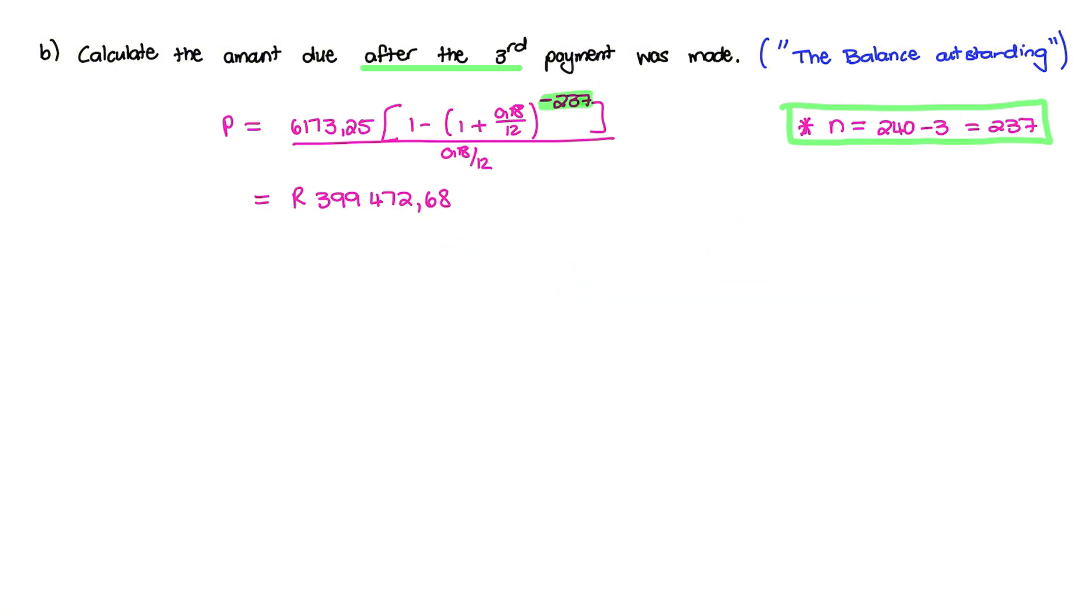So when we move money backwards, we are missing three payments. And in the previous question, we had 240 payments. But after three payments, we have 237 payments left. And we use the X value that we have found in our previous question. So I simply plug it into this present value annuity. And I have the balance outstanding as 399,472 Rand and 68 cents.